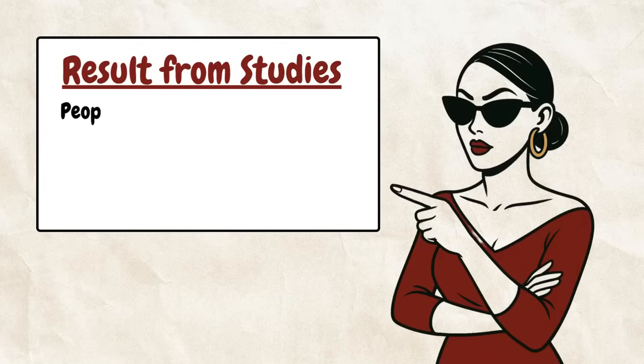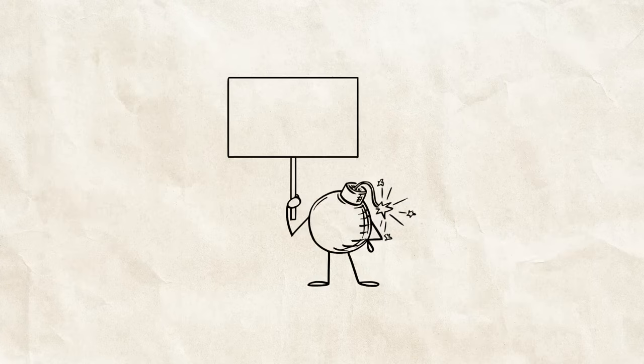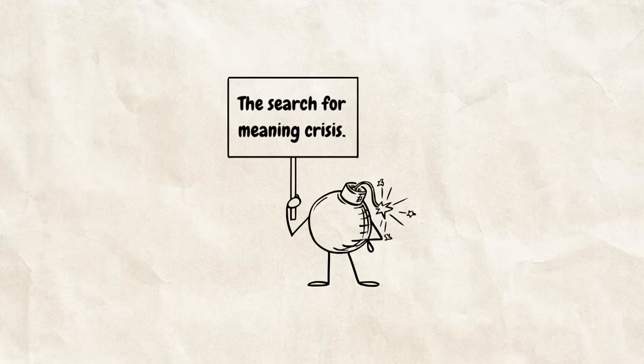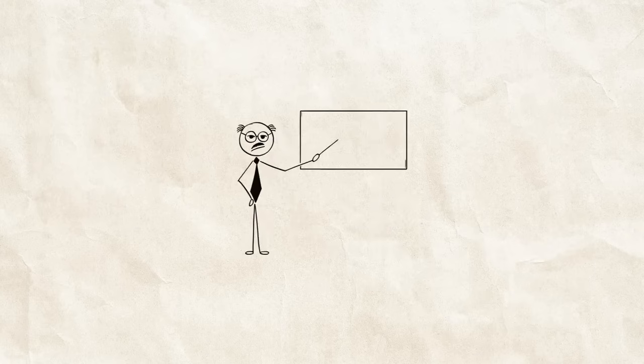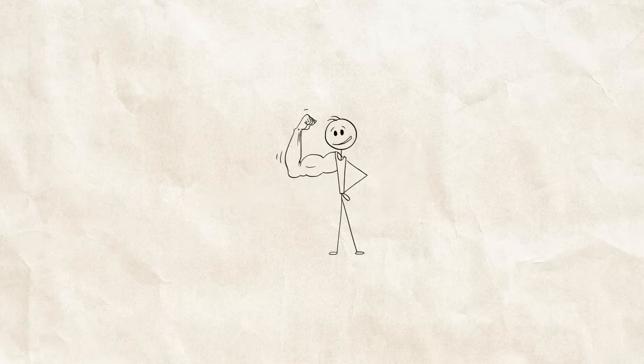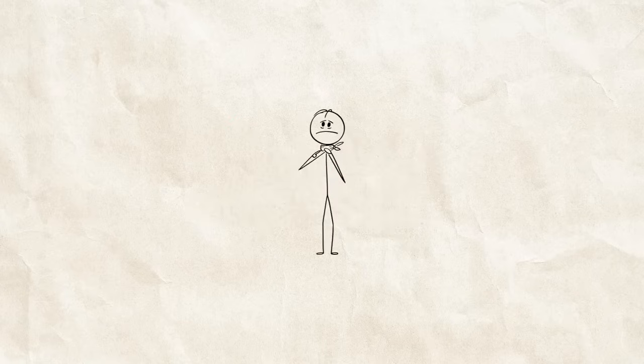Let me drop this bomb too. People are more likely to cheat when they're about to hit a milestone age like 29, 39, 49. It's called the search for meaning crisis. They're freaking out about getting older and trying to prove they've still got it. So if your partner is approaching one of these ages and suddenly buys a sports car and starts hitting the gym, it might not just be a midlife crisis. It might be pre-cheating behavior.